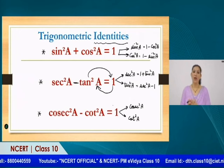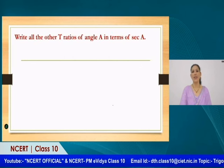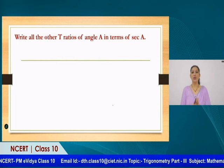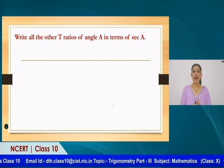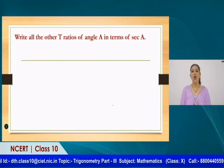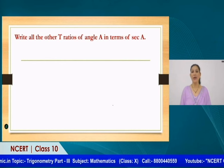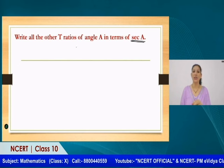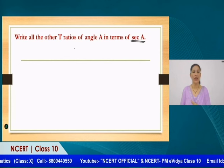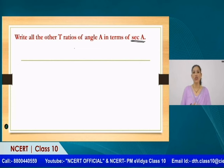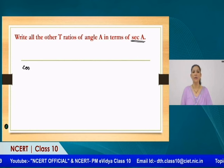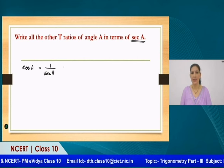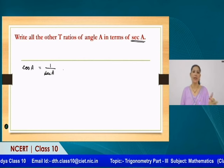Now let us do one more question. Write all the other T-ratios of angle A in terms of sec A. As we discussed, all 6 T-ratios are interlinked. We need to express all remaining T-ratios in the form of sec A. Very easily, you can write cos A in terms of sec A, because cos A is the reciprocal of sec A.